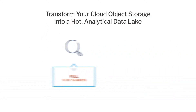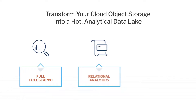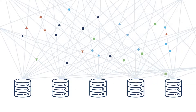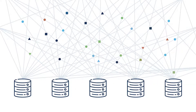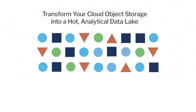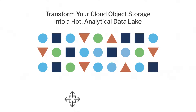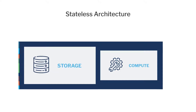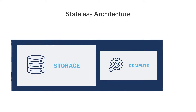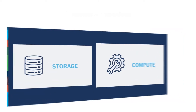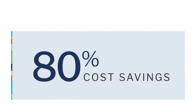ChaosSearch supports full-text search, relational, and machine learning analytics. It indexes all the data in your cloud object storage as-is, while auto-detecting native schemas and optimizing for both data size and performance. ChaosSearch's stateless architecture provides independent and elastic scaling of storage and compute for seamless scalability with up to 80 percent cost savings.